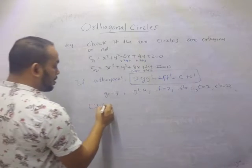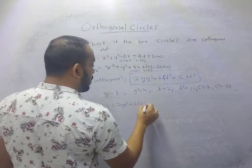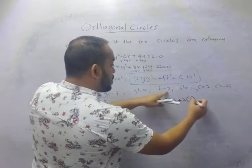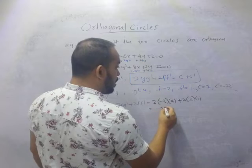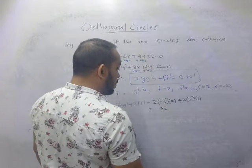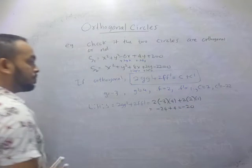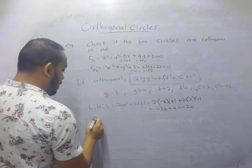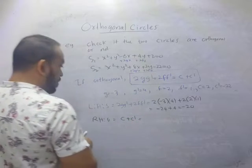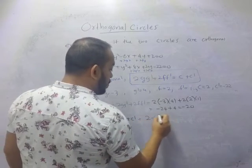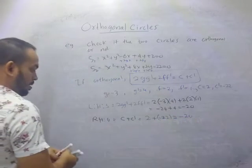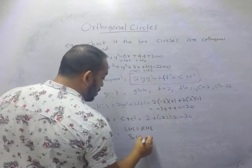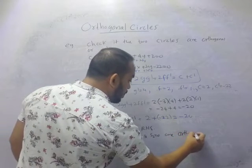Now compute the left-hand side: LHS = 2gg' + 2ff' = 2(−3)(4) + 2(2)(1) = −24 + 4 = −20. Then the right-hand side: RHS = c + c' = 2 + (−22) = −20. Since LHS = RHS = −20, this implies s1 = 0 and s2 = 0 are orthogonal circles.